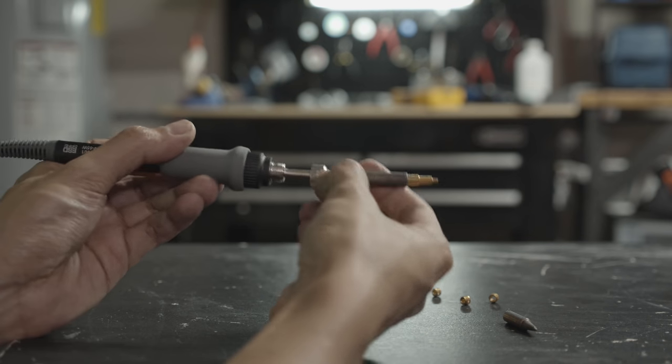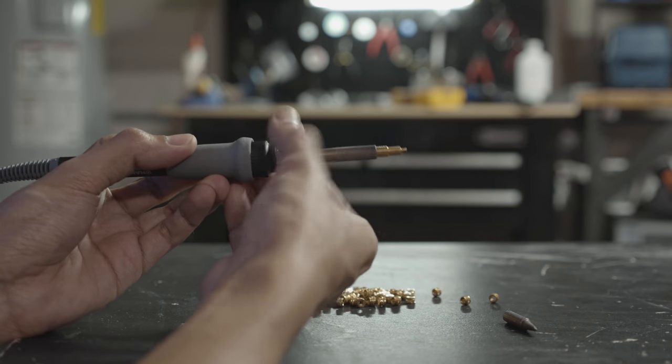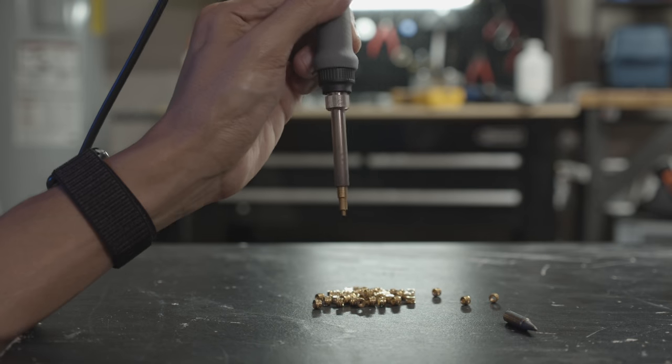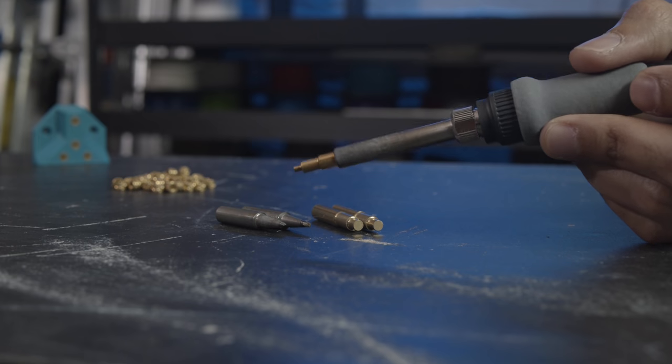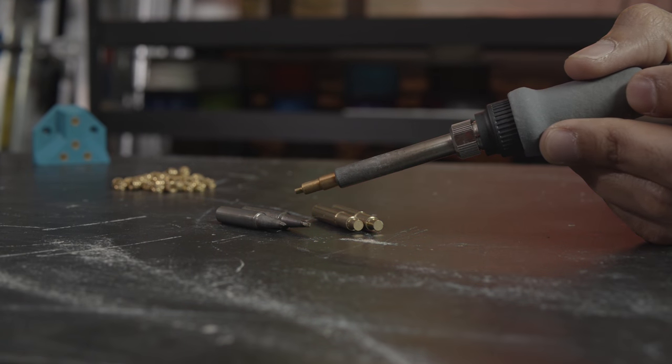These are compatible with irons that use the internal ceramic heaters, like the many Hackos and Wellers. This thing has a longer shank than the McMaster ones, so you can reach into deeper parts and tighter corners without touching the plastic.